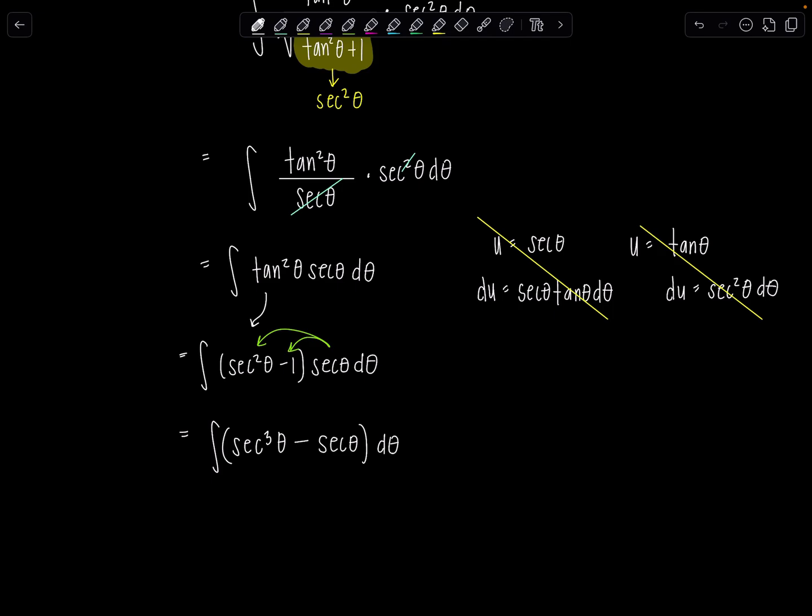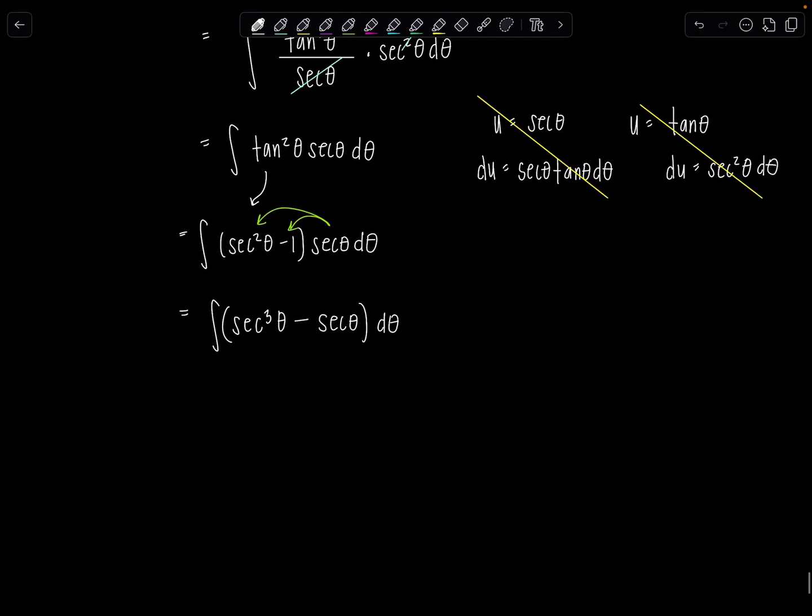Now, perhaps you've just memorized the antiderivative of secant cubed theta because you'll see it from time to time, and it's a little tedious to derive. It's not the end of the world, though. But just in case you haven't, I'll work through it with you. Minus, and then we have integral secant theta, d theta. So I'm going to split this guy into two parts depending on where you're at. If you've already memorized this, then good for you. That's the first one I'll do. And then this antiderivative of secant theta, d theta, we should all know that.